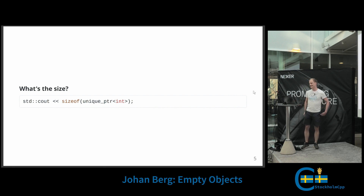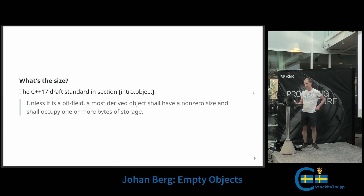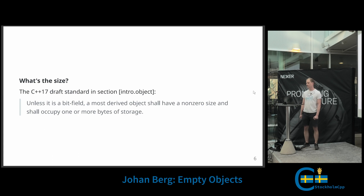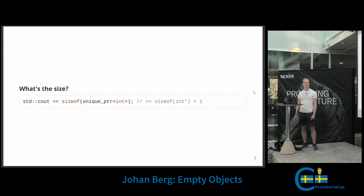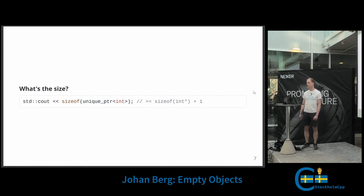Well, all major compilers will print 16 here. Why is that? The standard says that unless it's a bit field, a most derived object shall have a non-zero size and shall occupy one or more bytes of storage. So even an empty object has to have a non-zero size. Most implementations will use one byte for an empty object, so it will be eight bytes for the pointer plus one byte for the empty object plus seven bytes of padding to align it on an eight-byte boundary — a total of 16 bytes.